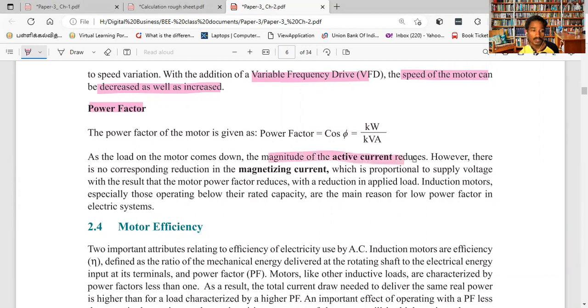When the active current reduces, there is no reduction in the magnetizing current. The load current will reduce, but the magnetizing current does not.